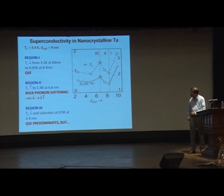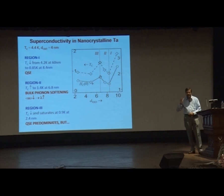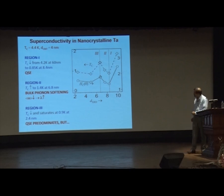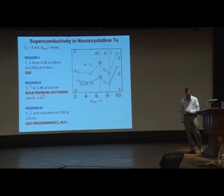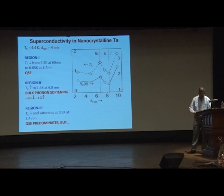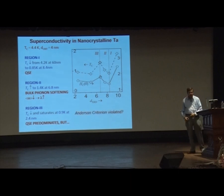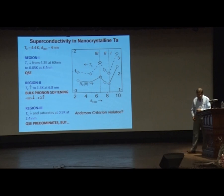We can now summarize the TC changes and explain them. We divide the total particle size regime into three regions. In Region 1 the TC decreases with particle size — a simple effect of quantum size effects pushing TC down, as seen in lead. In Region 2, there is non-monotonic behavior — TC increases because of bulk phonon softening, which counteracts the quantum size effects. In Region 3, TC goes down again because the lattice constant change also flattens out at low particle sizes.